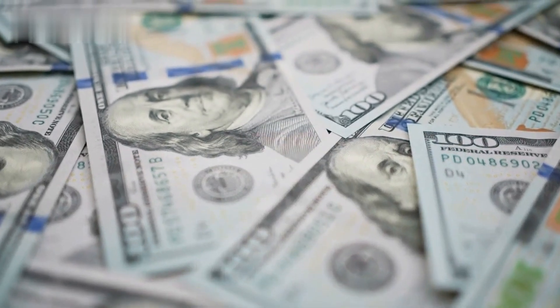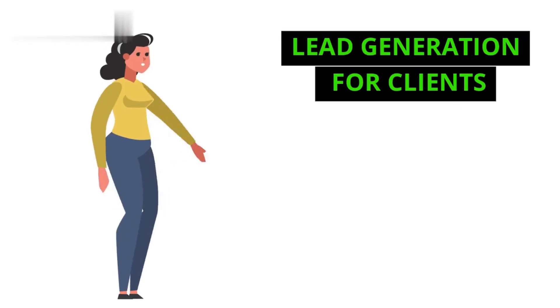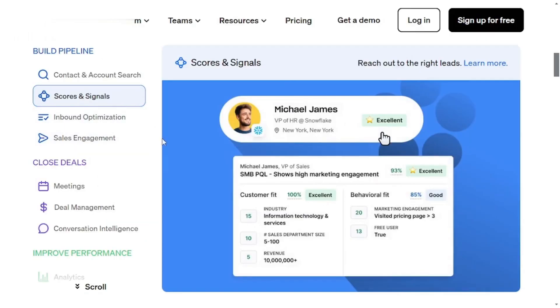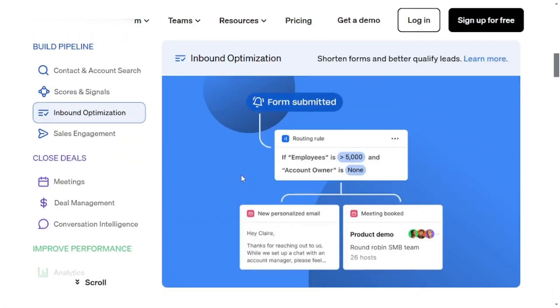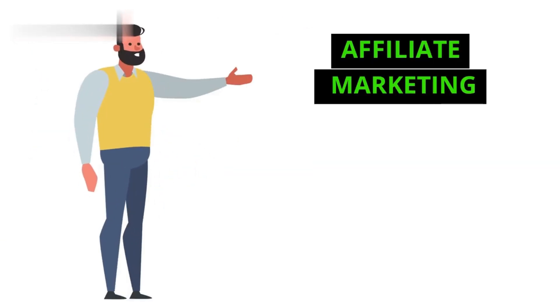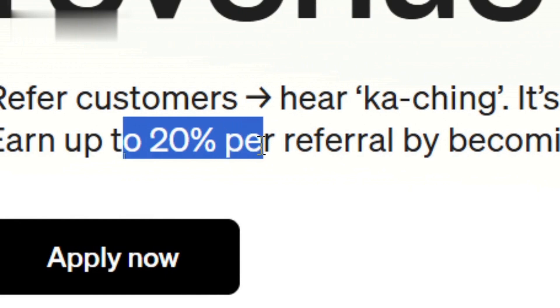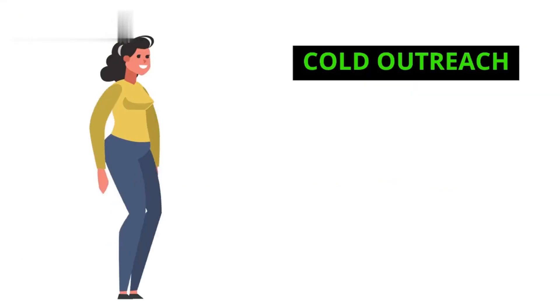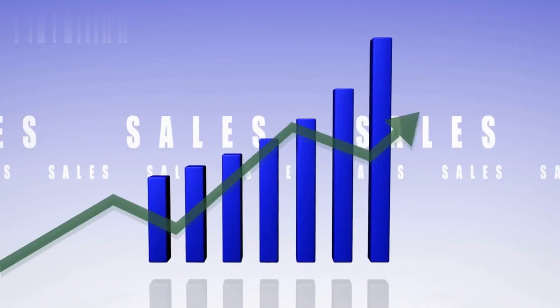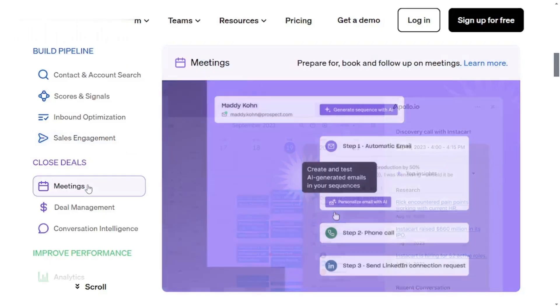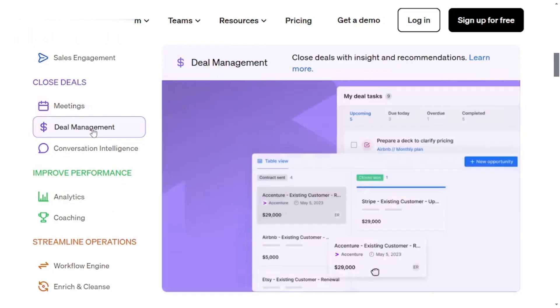Section 2: How to make money using Apollo.io. Let's get to the good stuff — how you can make money using Apollo.io. Here are three simple ways. First, lead generation for clients: you can use Apollo's database to find potential customers for businesses and charge a fee for providing leads. Second, affiliate marketing: use Apollo.io to discover businesses that are hiring affiliates and promote their products or services for a commission. Third, cold outreach: reach out to businesses that might need your product or service and close sales directly. Apollo.io makes this super easy with their outreach tools.